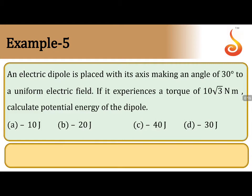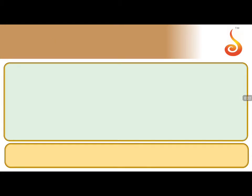So here they gave the torque. From the help of the torque we need to find the potential energy. So here, say this is uniform electric field of strength E. Now you place a dipole at an angle of 30 degrees.